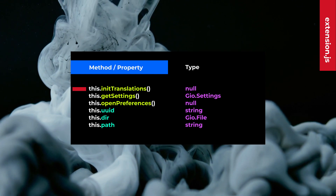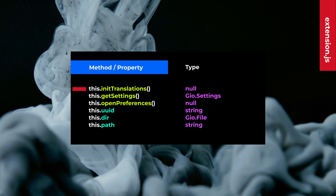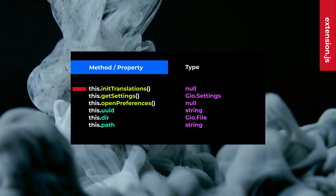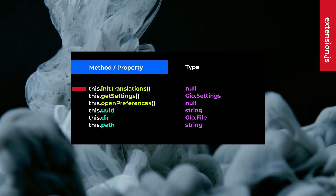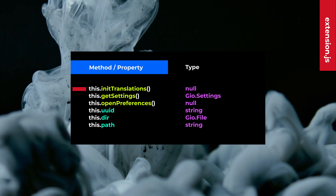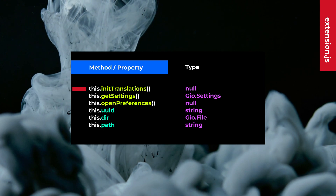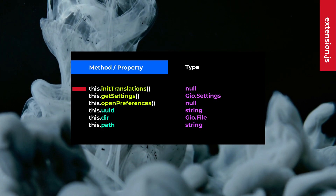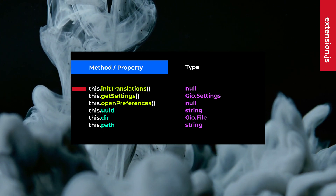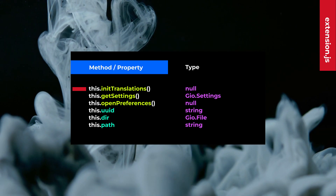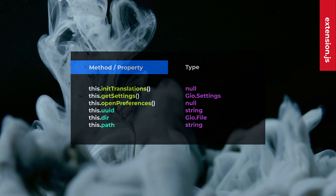For init translations, you don't need it anymore — only specify getTextDomain in metadata.json. GNUPShell can automatically initiate the translation for you when it sees the getTextDomain key in metadata.json.